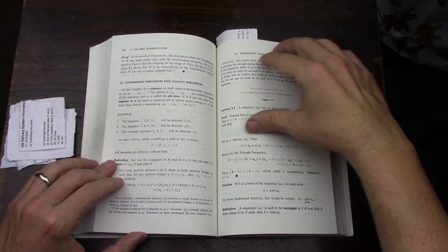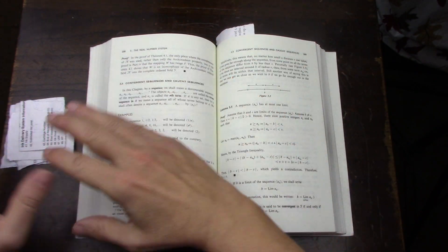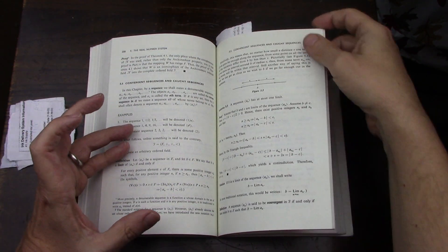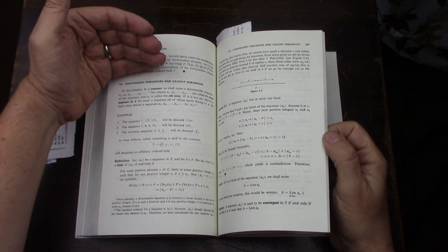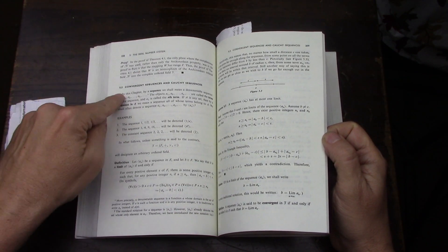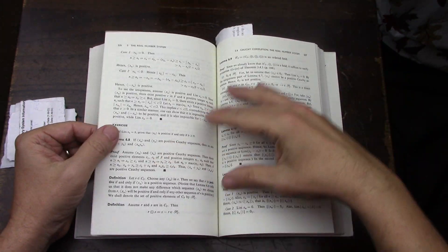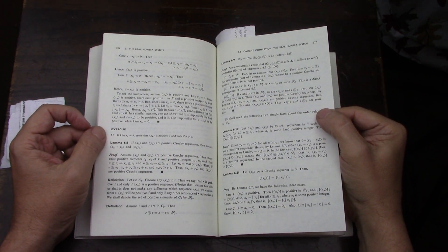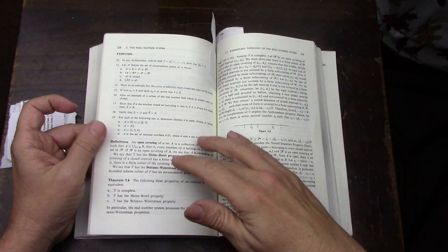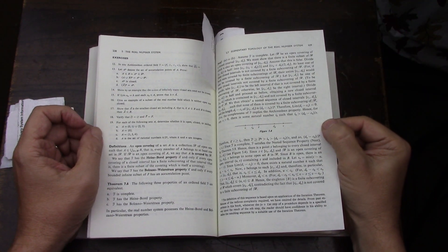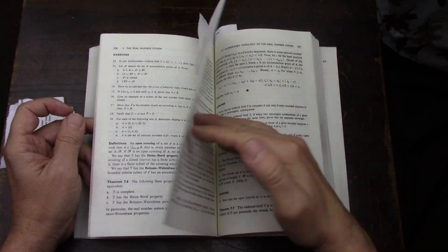Then also, for me, really, after all that, the meat of the book for my own use is everything between Sections 5.5, Convergence Sequences and Cauchy Sequences, Section 5.6, Cauchy Completion and the Real Number System, and then, last but not least, Elementary Topology of the Real Number System.